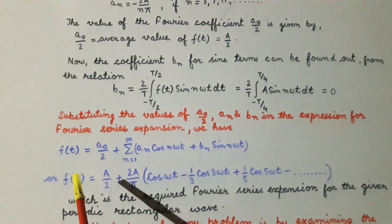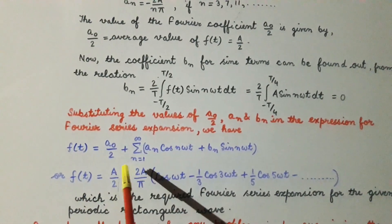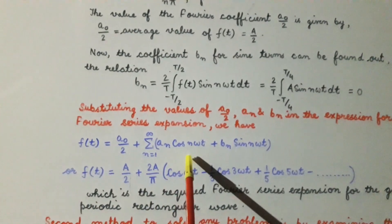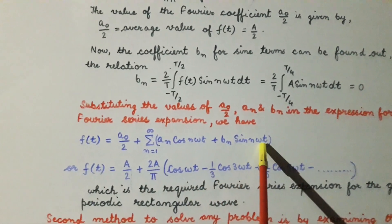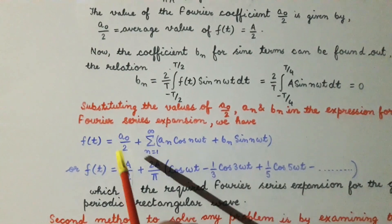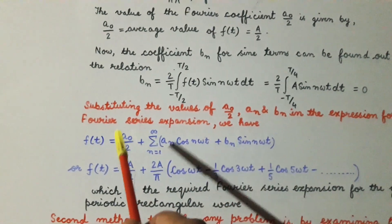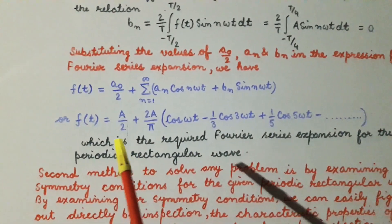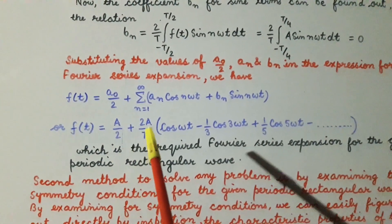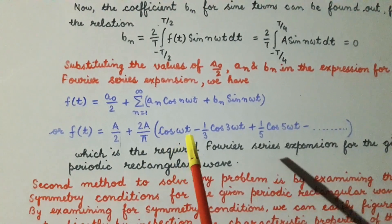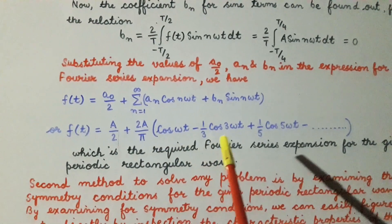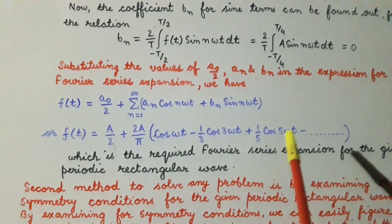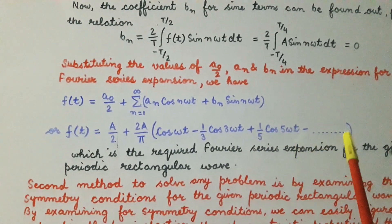Once we have found all three coefficients — a₀/2, aₙ, and bₙ — we substitute them into the Fourier series expression: f(t) = a₀/2 + Σ(aₙ·cos(nωt) + bₙ·sin(nωt)). Substituting the values, the expression for f(t) comes out to be: f(t) = A/2 + (2A/π)·[cos(ωt) − (1/3)cos(3ωt) + (1/5)cos(5ωt) − …].